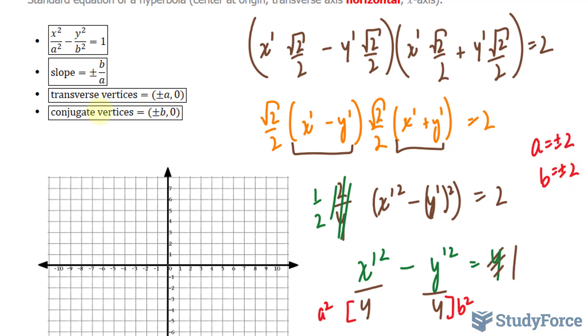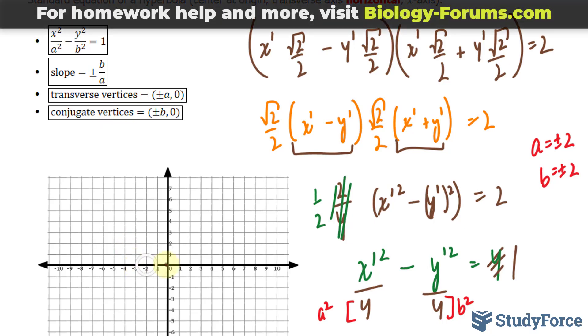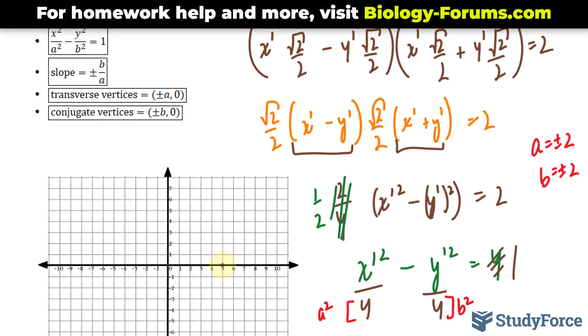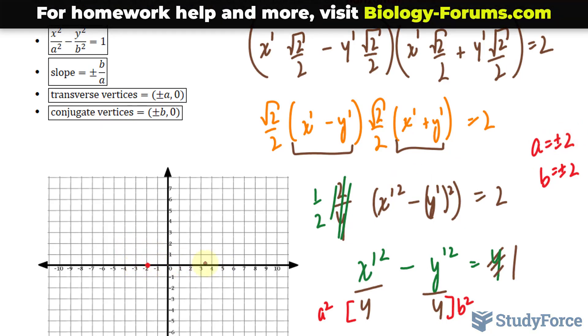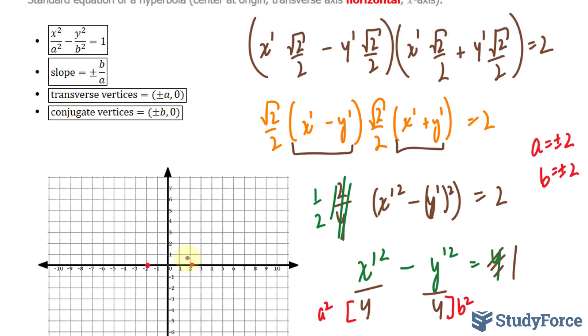a represents the transverse vertices, and remember the transverse axis is the one that connects the two vertices. So we'll have a vertex here and one here. Remember, this is if it were a normal hyperbola. And the conjugate vertices will be at 2 and 2, over here and here. So our hyperbola should have looked like this.